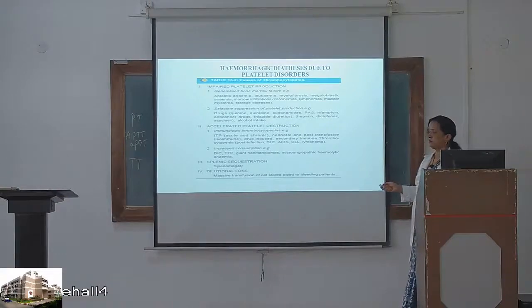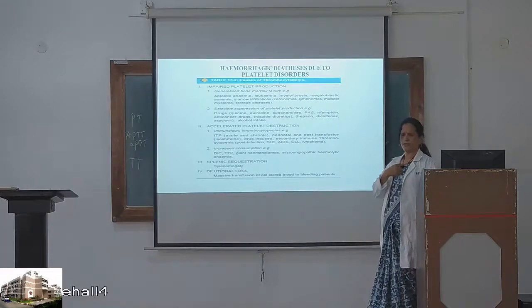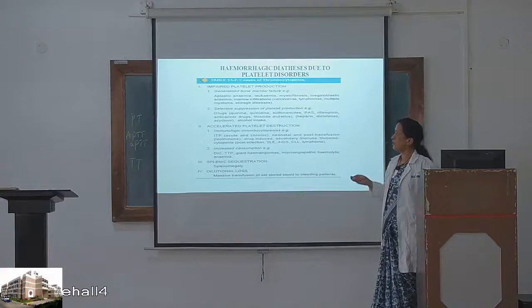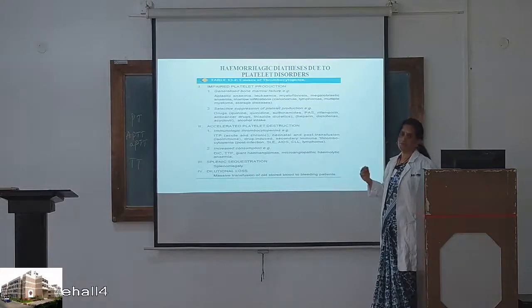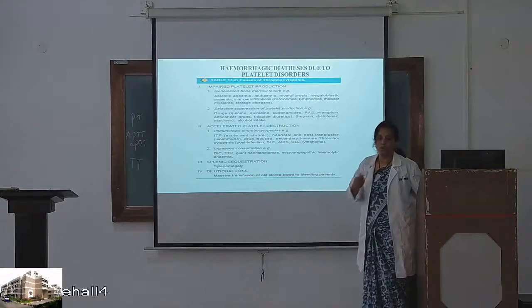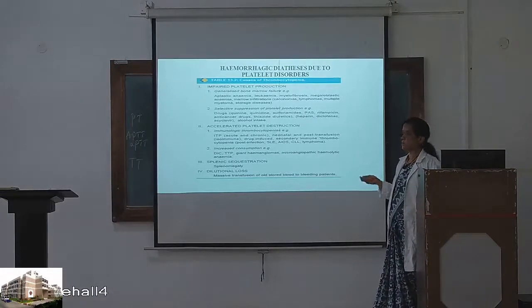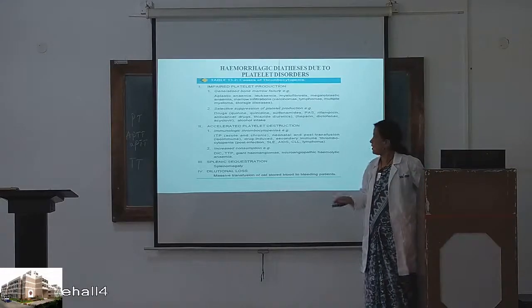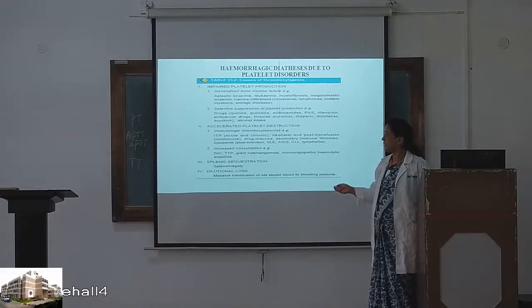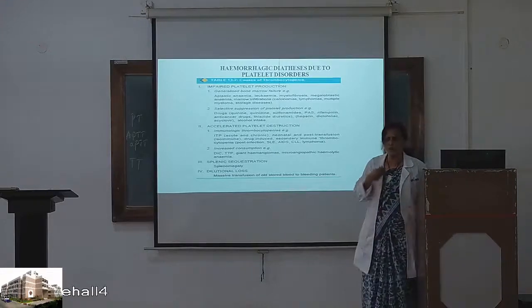Impaired platelet production: platelets are produced in the bone marrow. Bone marrow failure — aplastic anemia, or other cells growing in the bone marrow as in leukemia, myelofibrosis where the entire bone marrow shows fibrosis with no hematopoietic activity. Selective suppression of platelet production may also be caused by drugs such as quinine, rifampicin, anti-tuberculous and anti-malarial drugs, and alcohol intake.